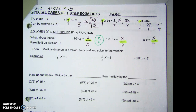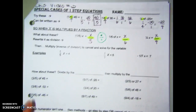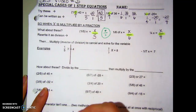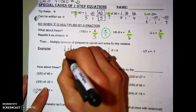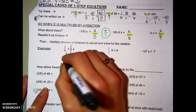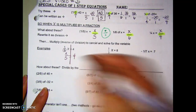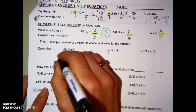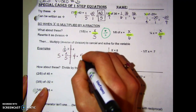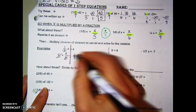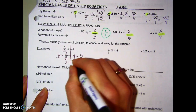We talked about in the last video that when solving equations, I use the inverse operation to cancel things out. So if I have one-fifth of x equals 4, I can rewrite that as x being divided by 5, equals 4. To cancel it out, the inverse of dividing by 5 is to multiply both sides by 5. Cross out what cancels, show the work on both sides — x equals 20.